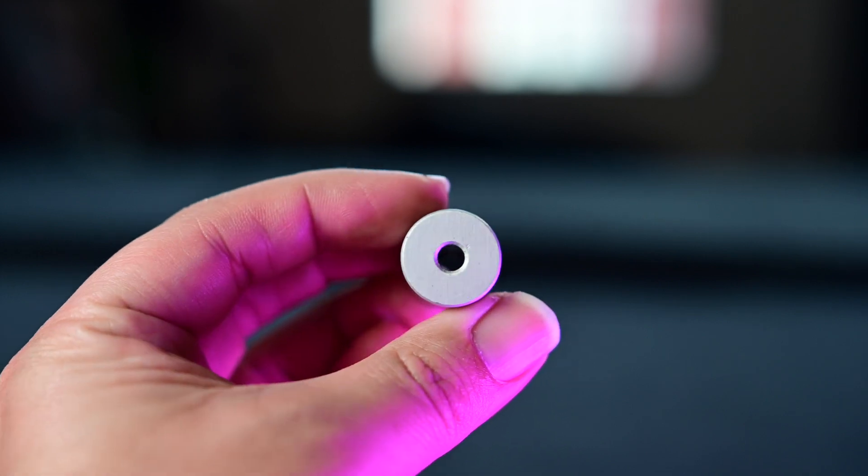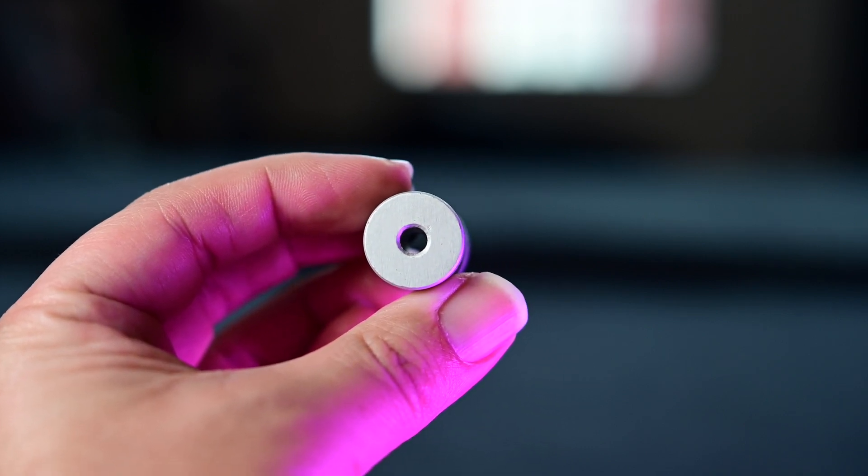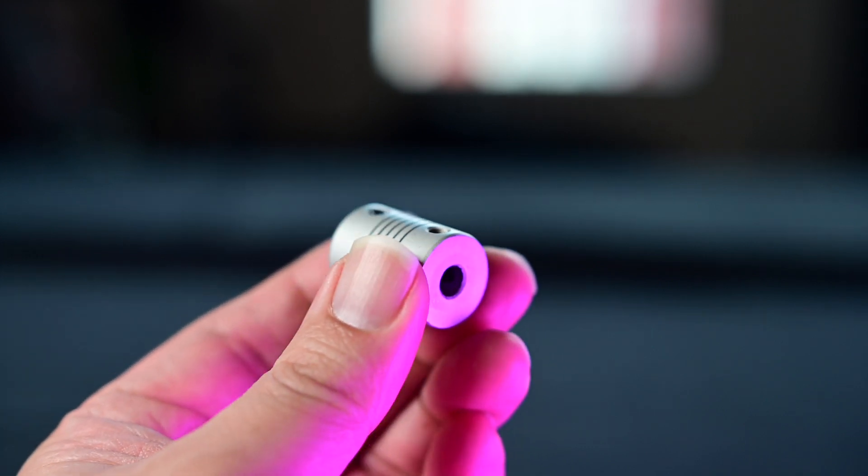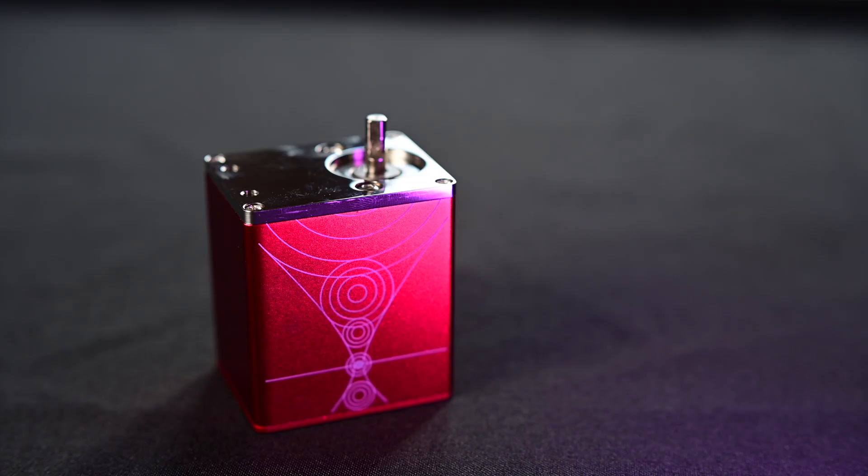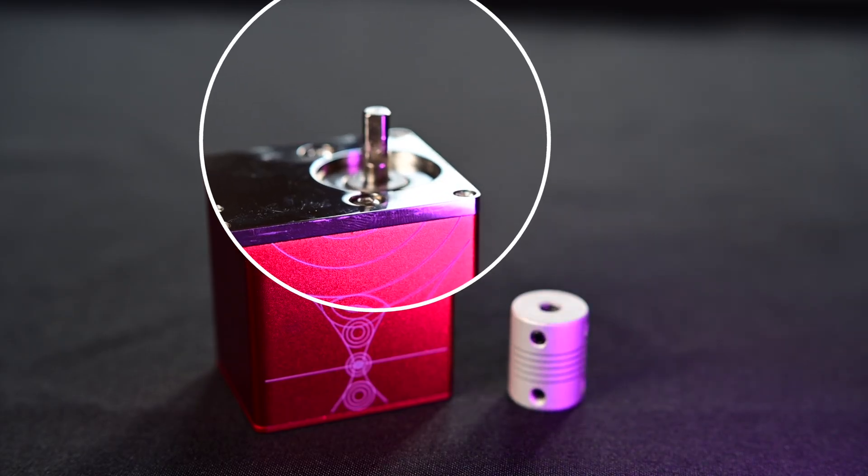Also take note that in the coupling there is a large hole and a smaller hole. The smaller hole is going to go onto the EAF shaft while the larger hole will go onto the telescope side.